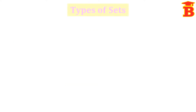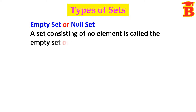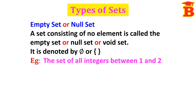Now let us see the types of sets. First, the empty set or null set. A set consisting of no element is called the empty set, null set, or void set. It is denoted by the null set symbol or empty brackets. For example, the set of all integers between 1 and 2 — since there is no integer between 1 and 2, it is a null set.